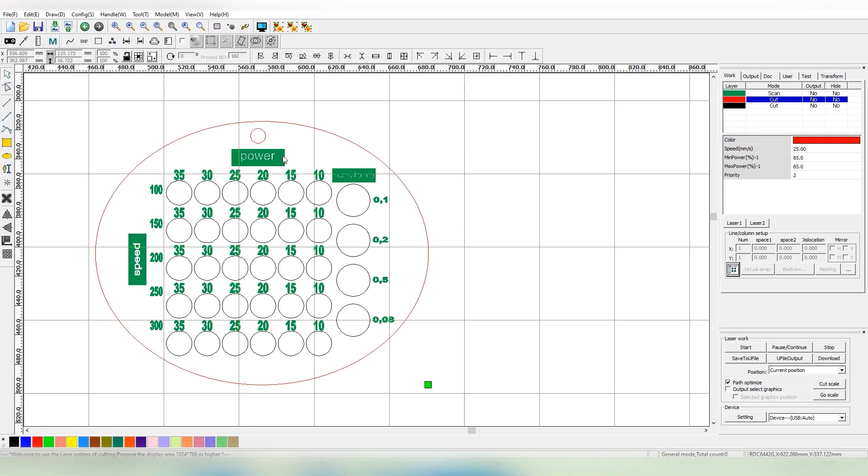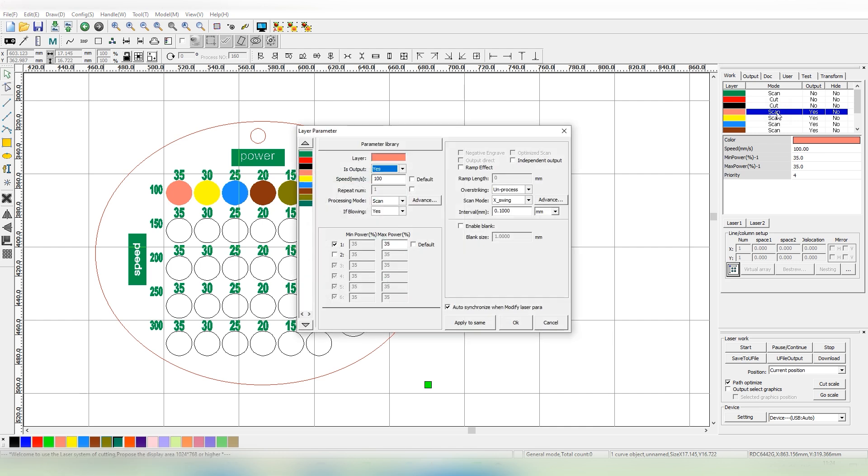Select the figures in turn and assign them a color, then for each color set its parameters, disabling the cutting and engraving colors of the text and the contour of the workpiece. Set the speed for the entire row to 100 millimeters per second.